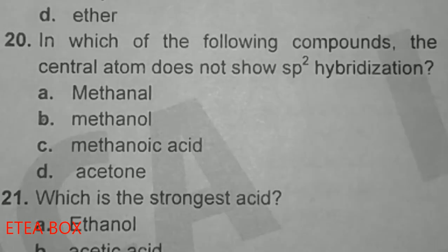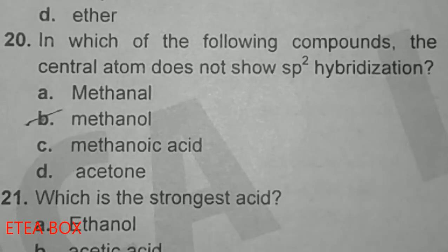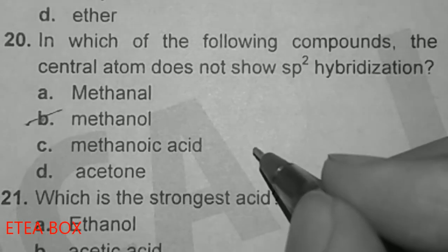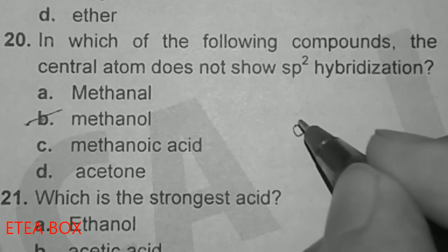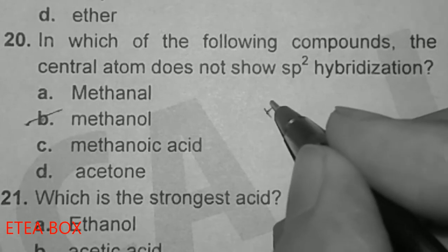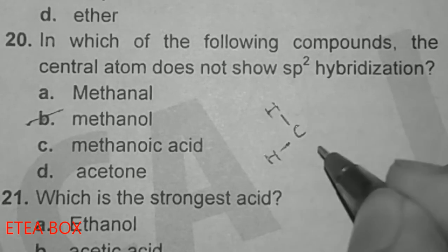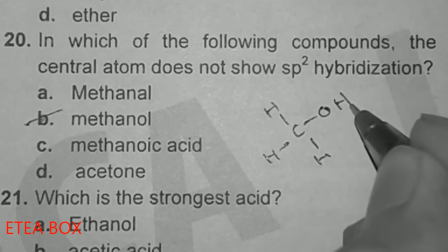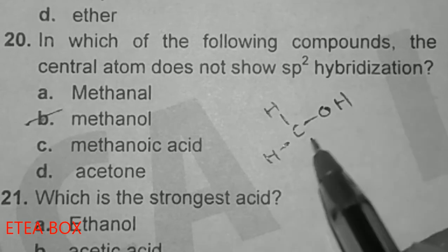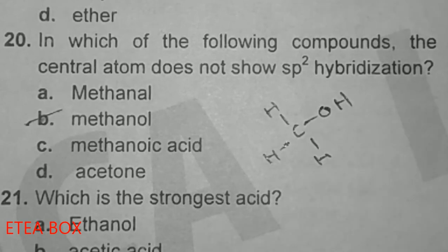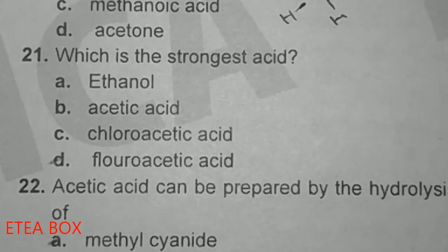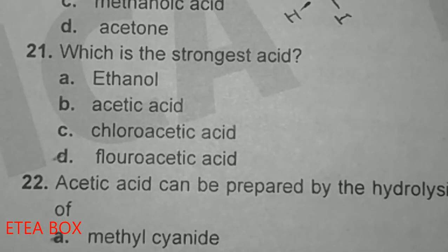In which of the following compounds does the central atom not show sp² hybridization? Methanol shows sp³ hybridization — it has four bonds (C, H, H, OH), giving sp³ hybridization.